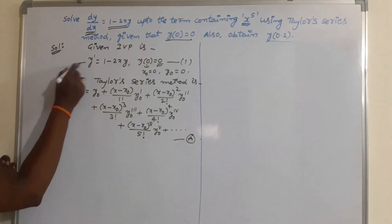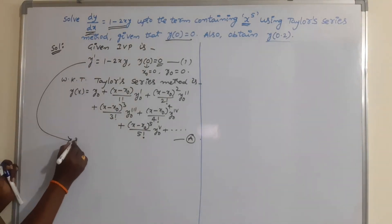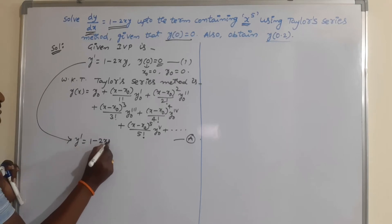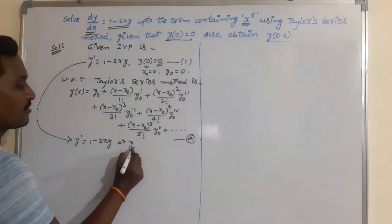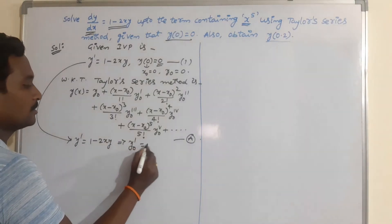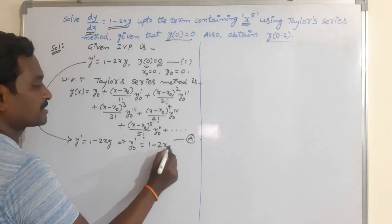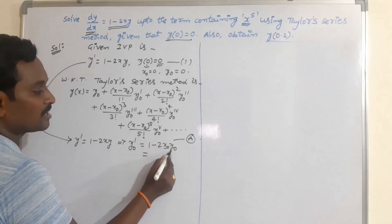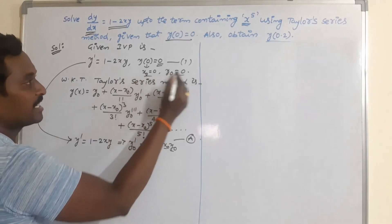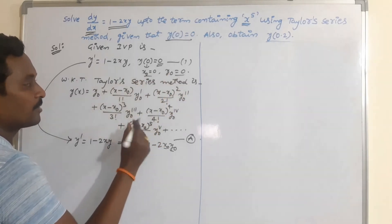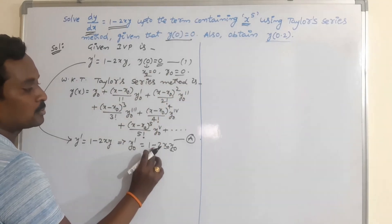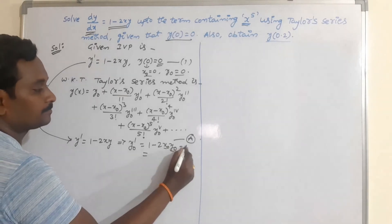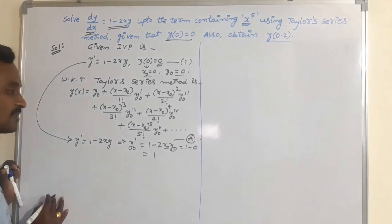From the given problem, y' = 1 minus 2xy. From this, write the expression of y₀': it is 1 minus 2x₀y₀. Replacing the values of x₀ and y₀ from the given initial conditions, both are 0, so we get 1 minus 0, which equals 1.